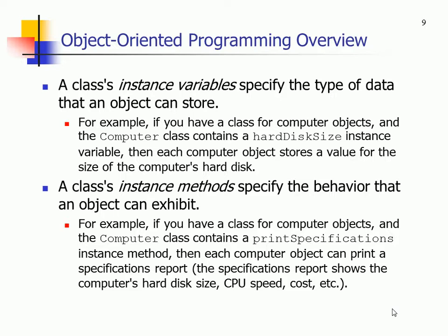Instance variables specify the type of data the object can store. For example, if you have a class of computer objects, it might contain variables like hard disk size, amount of memory, and processor type. If I have multiple instances of a computer object, could I have different hard drive sizes on each instance? Sure. Different memory on each instance? Sure.